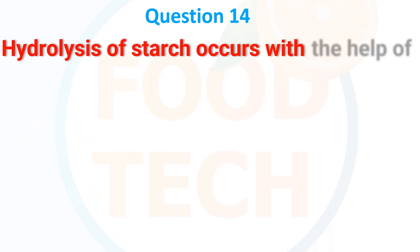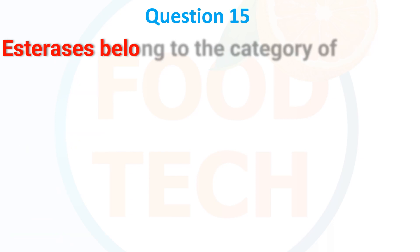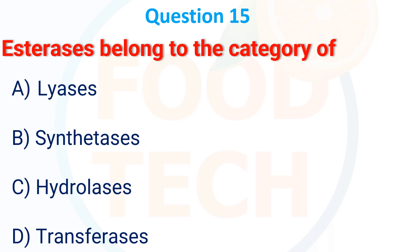Hydrolysis of starch occurs with help of: A. peptidase, B. sucrase, C. lipase, D. amylase. The answer is D, amylase.